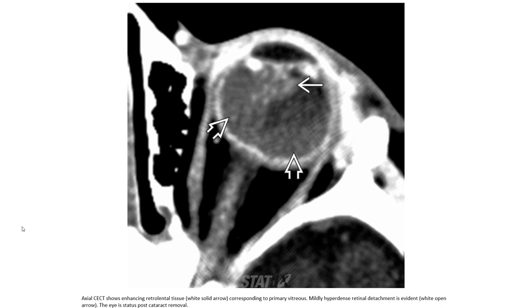This is PHPV on contrast-enhanced CT. Enhancing retrolental tissue corresponding to the primary vitreous is demonstrated. The hyperdense vitreous body is noted, with density higher than the normal vitreous.